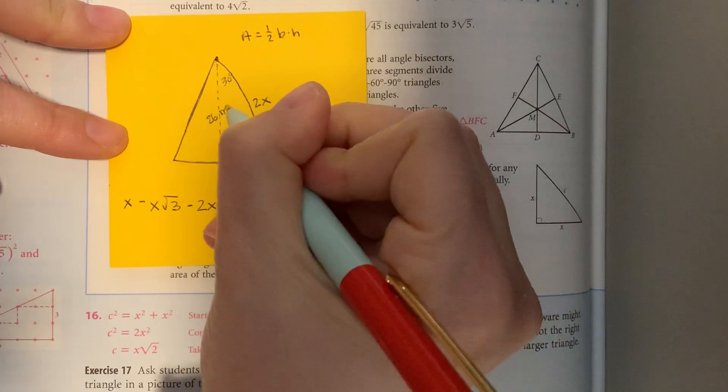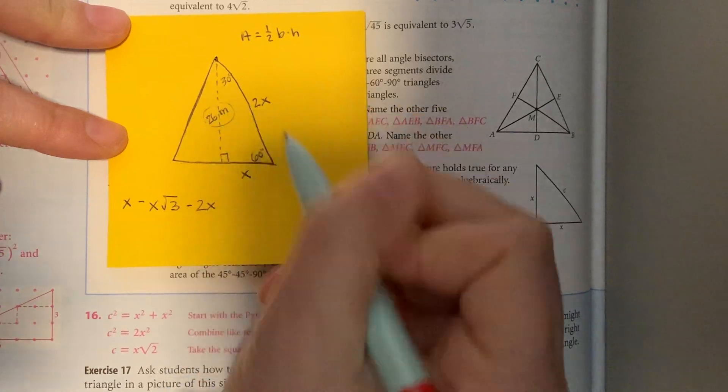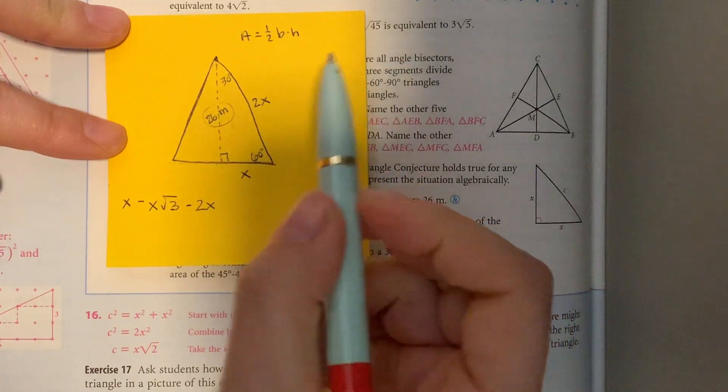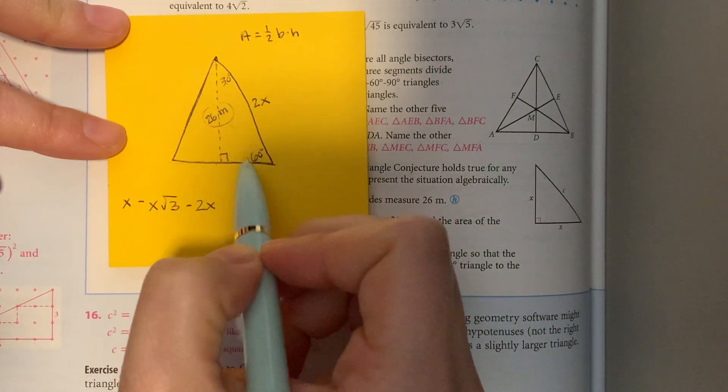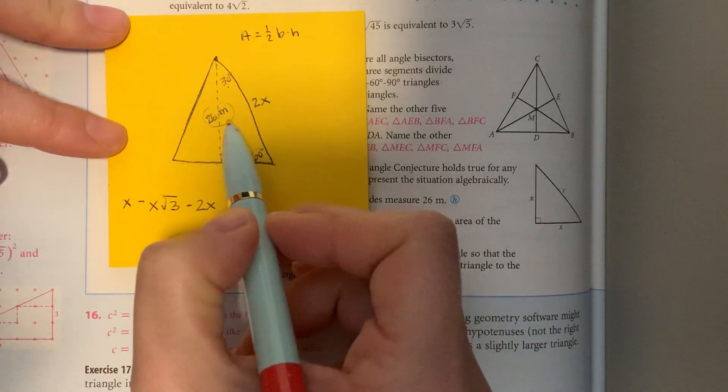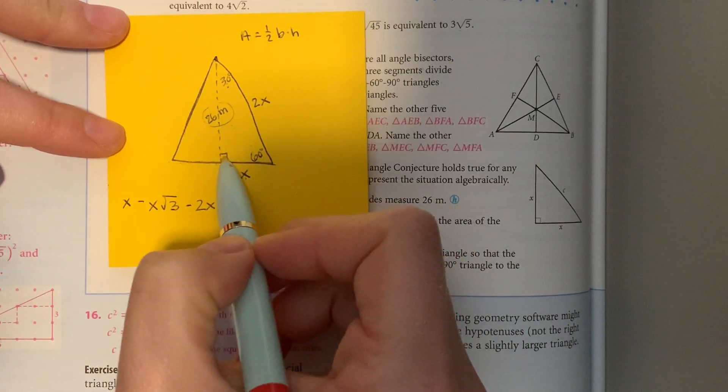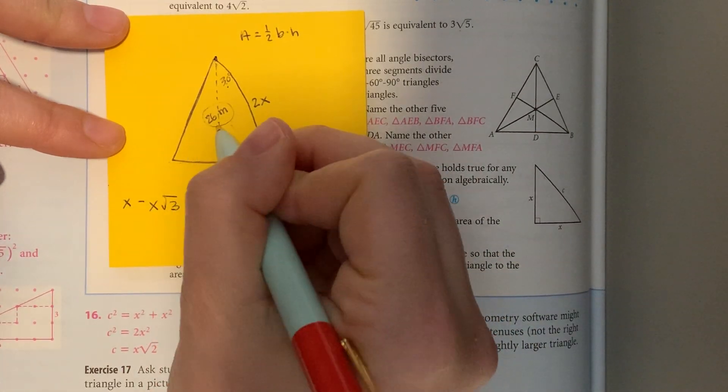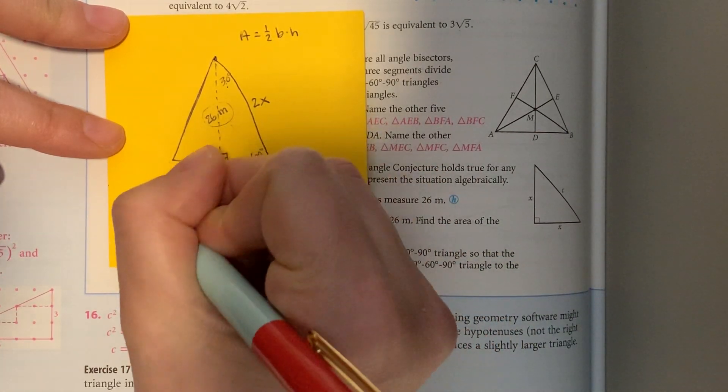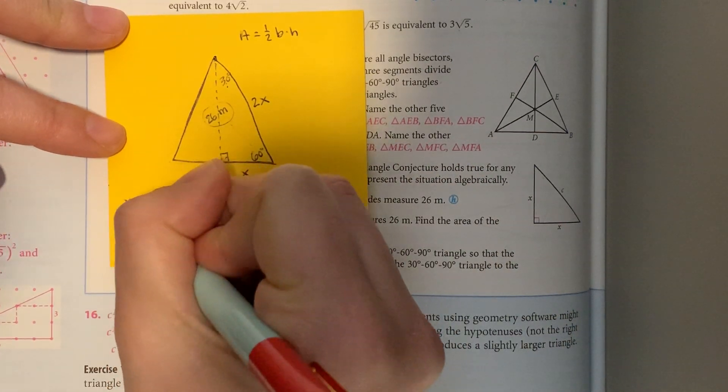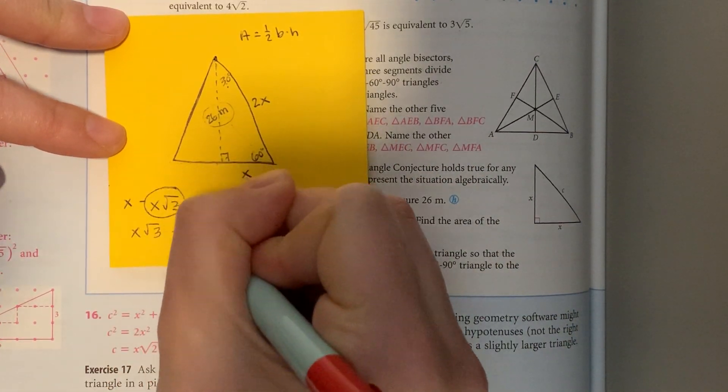We're given the long leg, which is 26 meters. We know it's the long leg because it's opposite the 60-degree angle. The short leg is opposite the 30-degree angle, since the shortest side is opposite the smallest angle. So we have x times the square root of 3 equals 26.